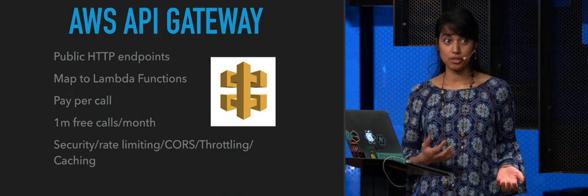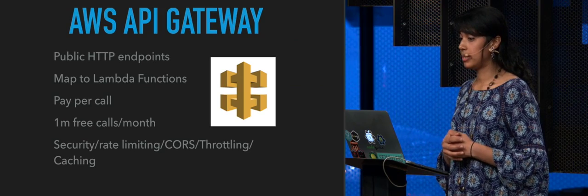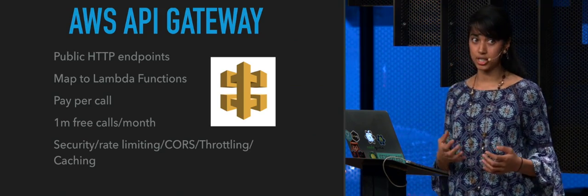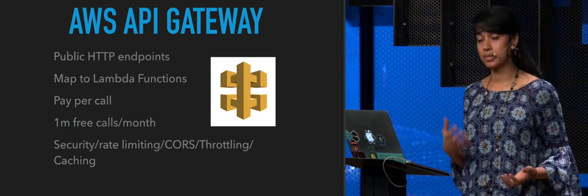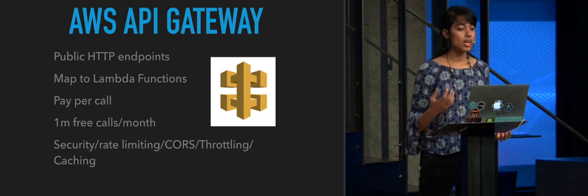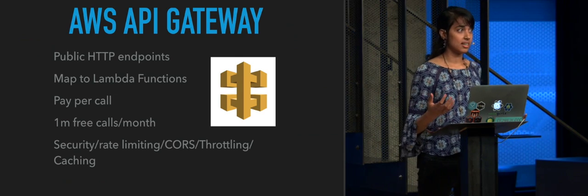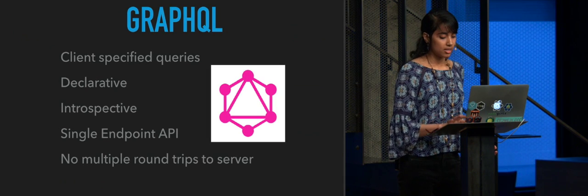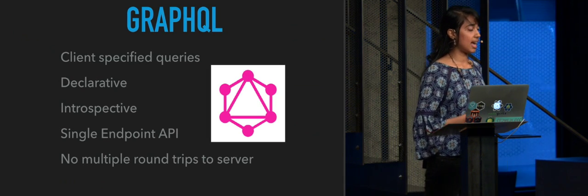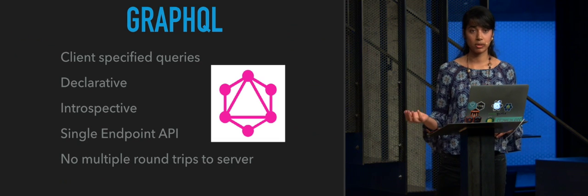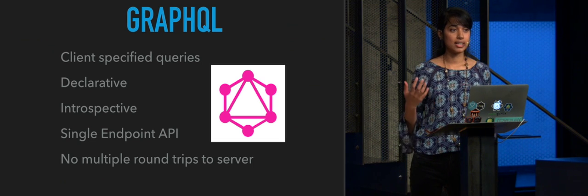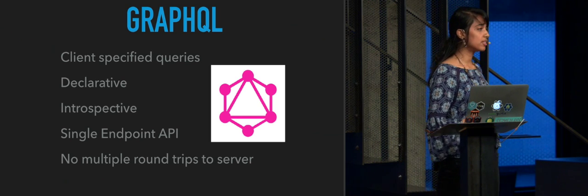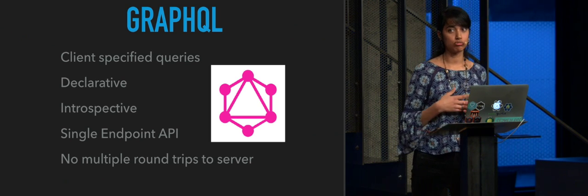Lambda by itself is really exciting, but it gets even more exciting when you pair it with the API Gateway. The API Gateway enables you to expose public HTTP endpoints, and these endpoints can map to Lambda functions. API Gateway is also really exciting in that it has a pay-per-call model and a really generous free tier. At Thomas Cook, we were using API Gateway and Lambda together with GraphQL. GraphQL is an application-level query language developed by Facebook and offers an alternative to a traditional REST API.